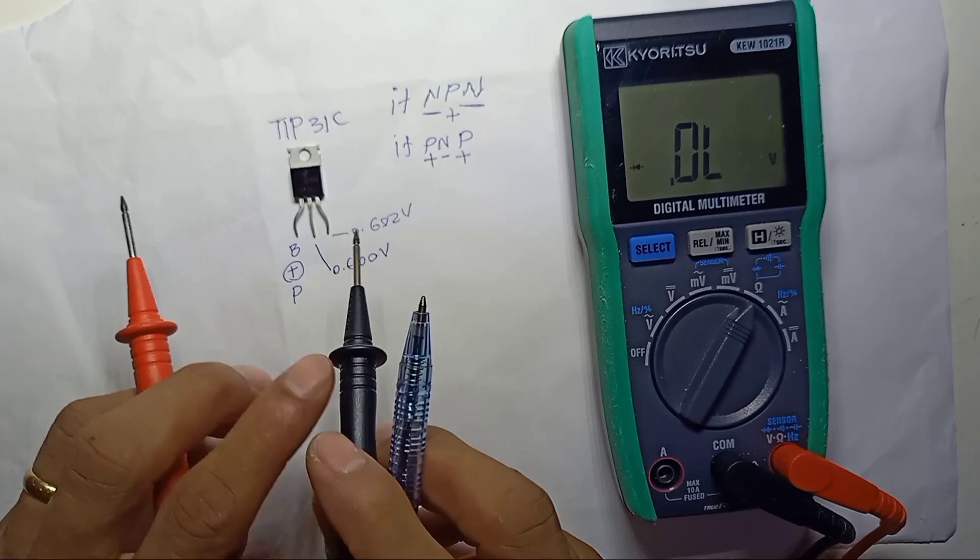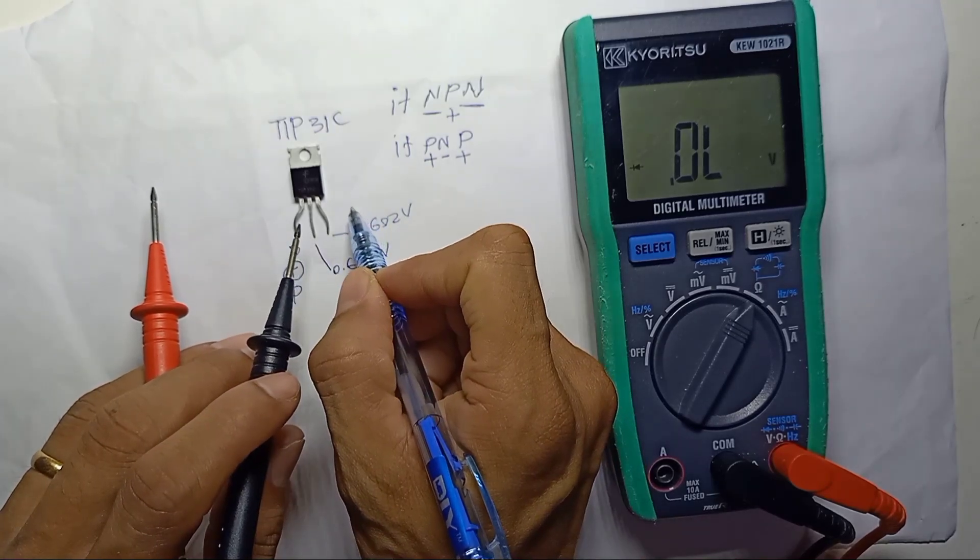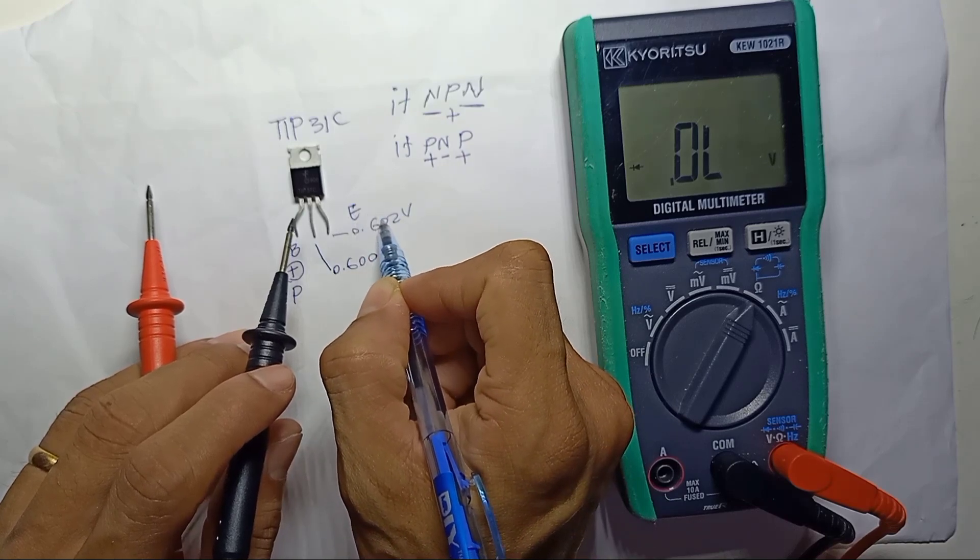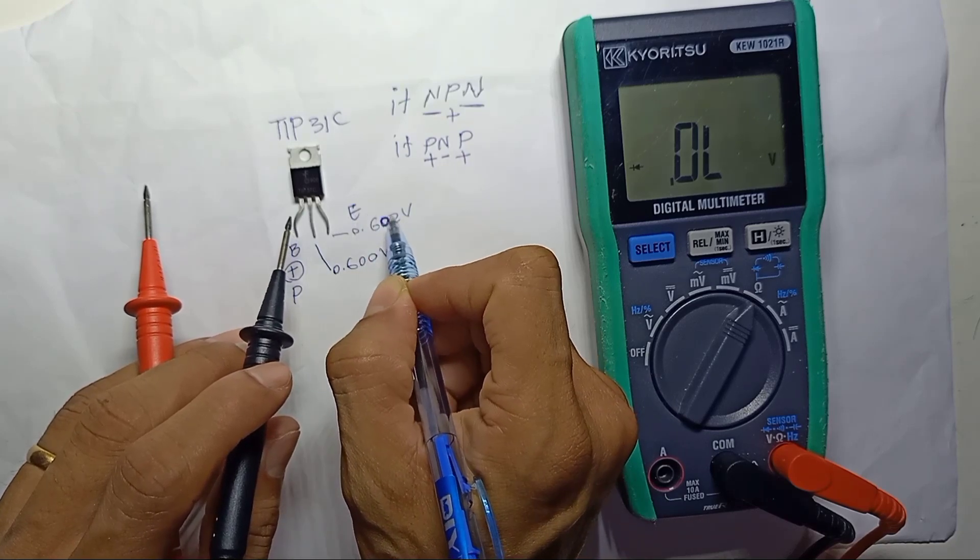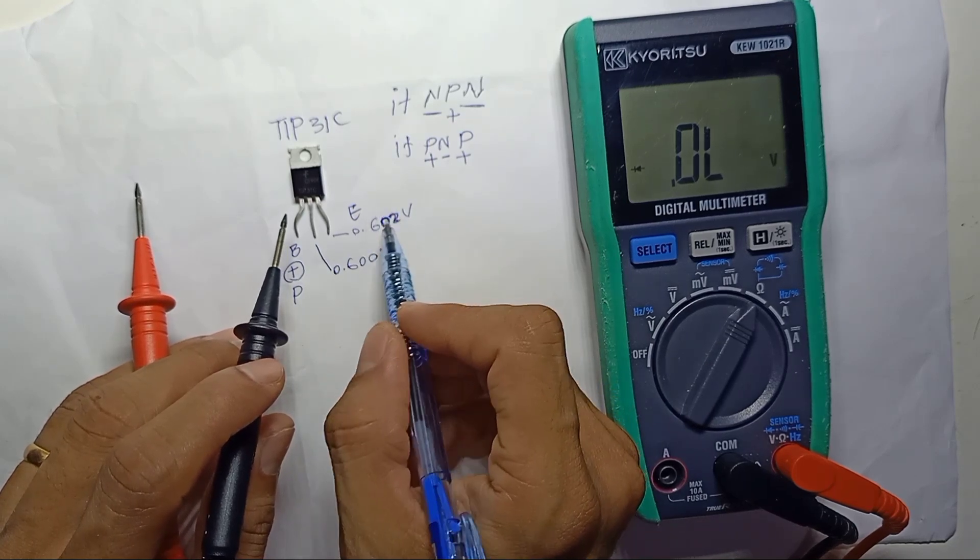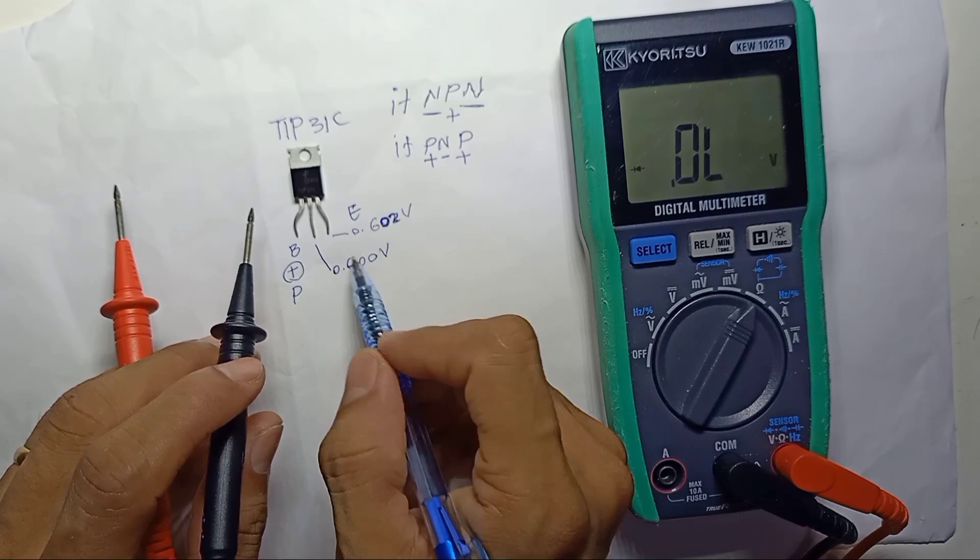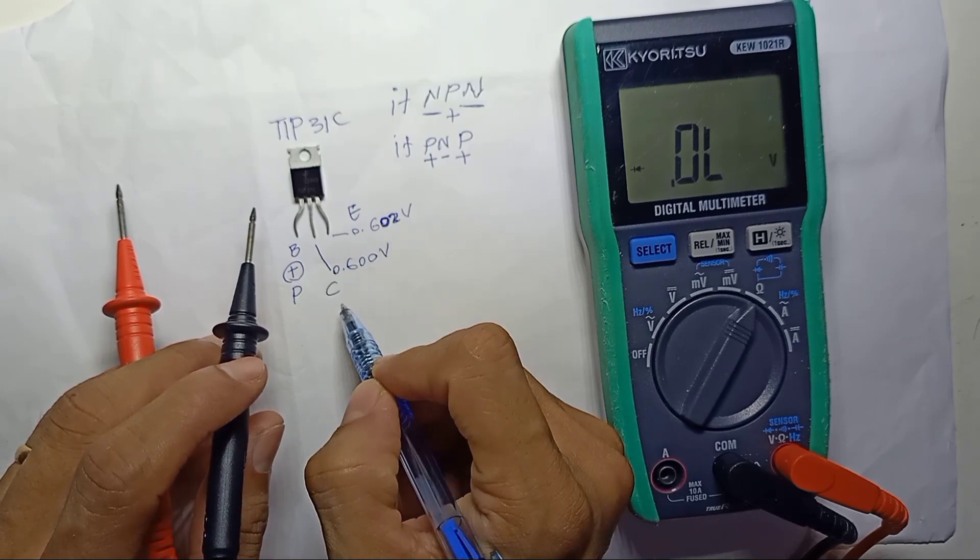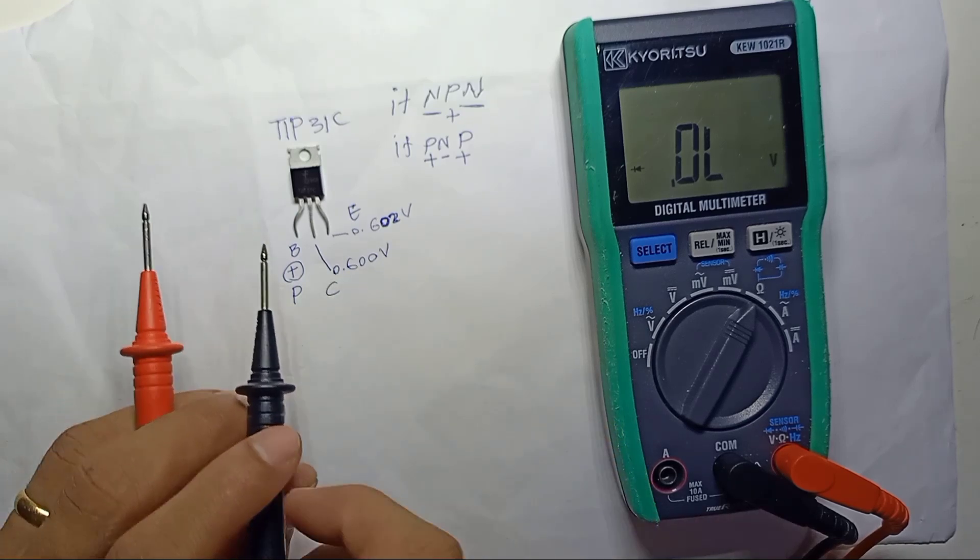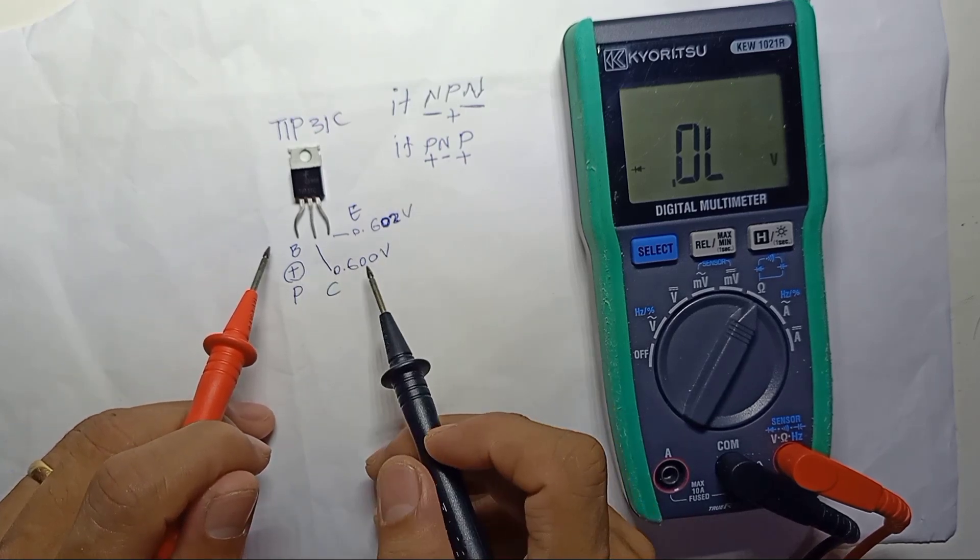So this is very simple. In the transistor, the emitter will always have more diode voltage drop. So here, the voltage drop is 602, which means this pin is emitter. Then the rest, of course, is collector. So this transistor is NPN transistor.